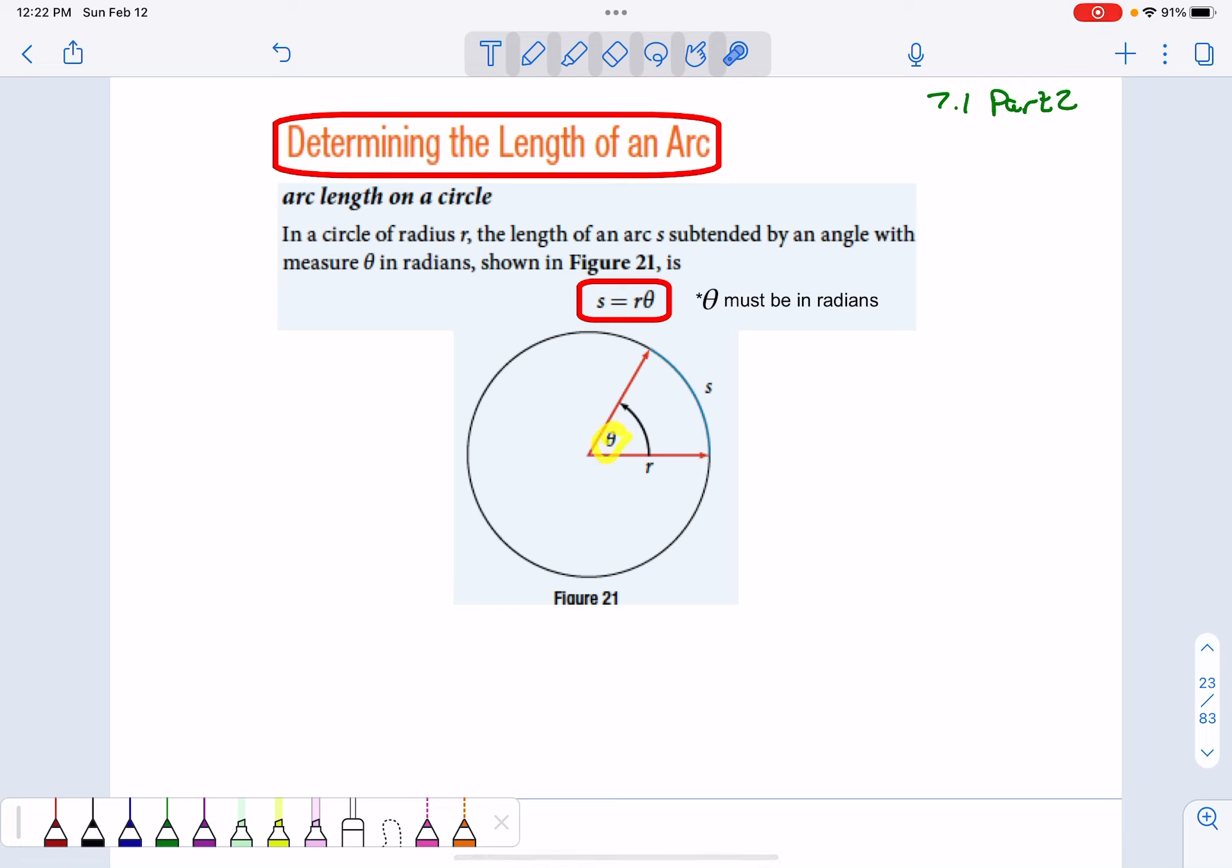Remember, theta has to be in radians for this to work. If it's in degrees, if we take degrees and multiply by pi and divide by 180, we get radians. If it isn't in radian measure, you could use that conversion at any time to change degrees into radians.